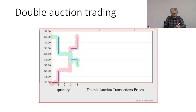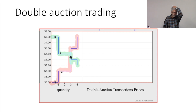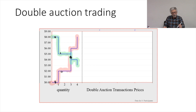What we do as the auctioneer is take any high offers to purchase and match them with offers to sell. Once we close the momentary auction, we have a price for those goods. So we have a sequence of offers to buy and offers to sell, and we match them up and then establish a price for the electricity.